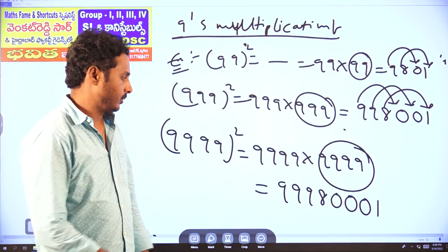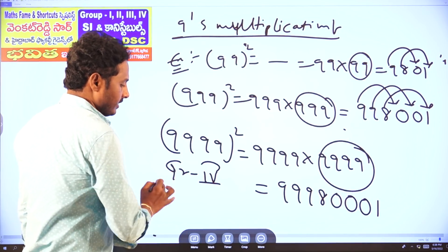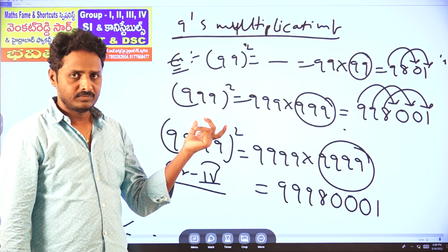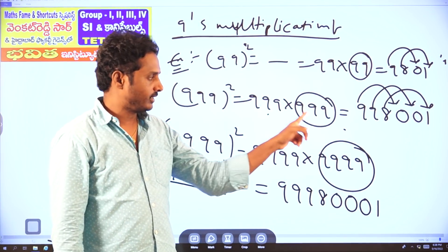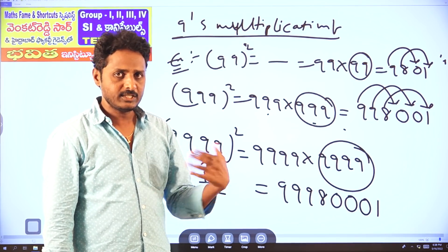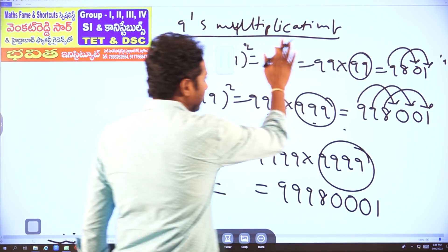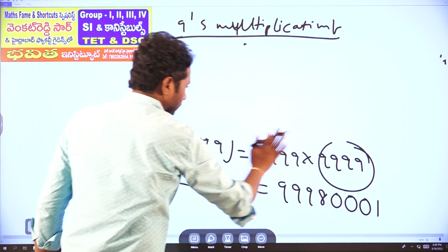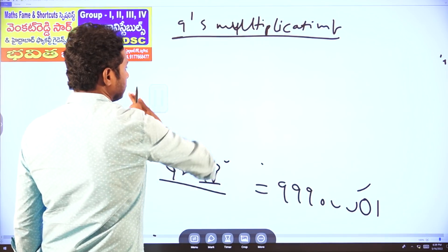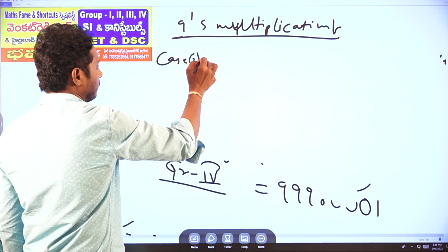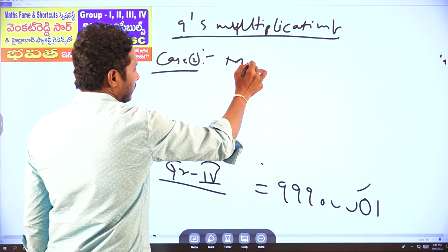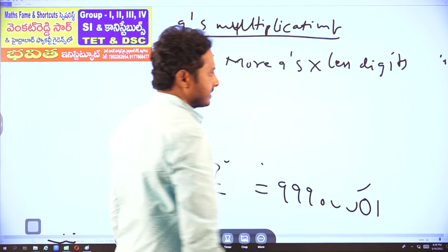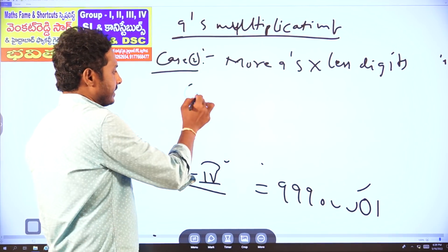Last time we had this question in Group 4. This is Case 1: equal nines into equal digits. But Case 2 in the nines multiplications — Case 2: more nines into less digits.